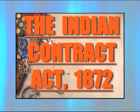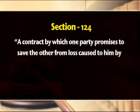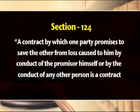According to Section 124 of the Indian Contract Act 1872, the scope is made narrower by defining the contract of indemnity as follows: a contract by which one party promises to save the other from loss caused to him by the conduct of the promisor himself or by the conduct of any other person is a contract of indemnity.